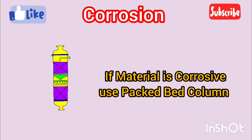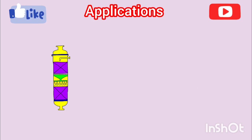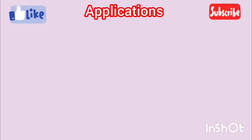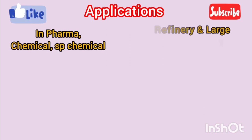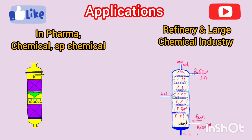If you talk application-wise, in refinery or in large scale industry, tray column is mostly used. And in small industries like specialty chemicals and pharmaceutical industries, we mostly use backbed column.